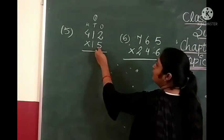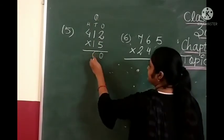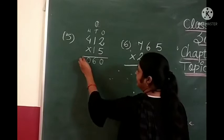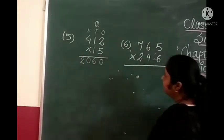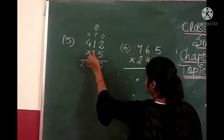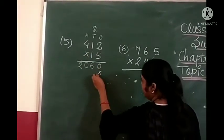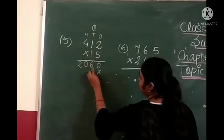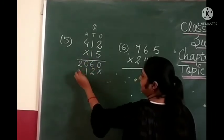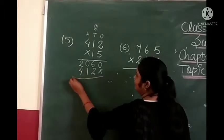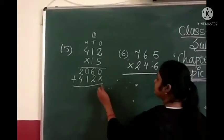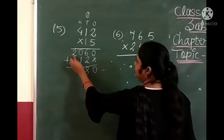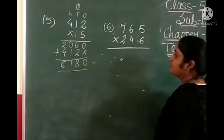Next number is 1. 5 ones are 5, plus 1 is 6. We write 0 then 2. Now the next digit is 1 in the tens place, so we put a cross here and start with the tens place. 1 twos are 2. 1 ones are 1. 1 fours are 4. We add: 0 stays, 6 and 2 are 8, 0 and 1 are 1, and 2 and 4 are 6. So our answer is 6,180.